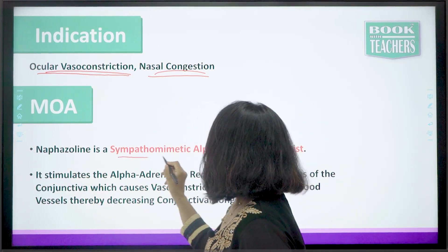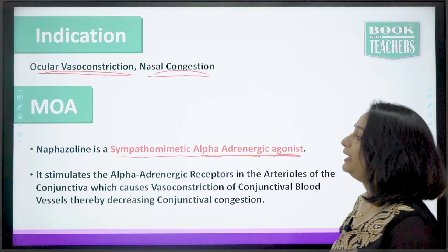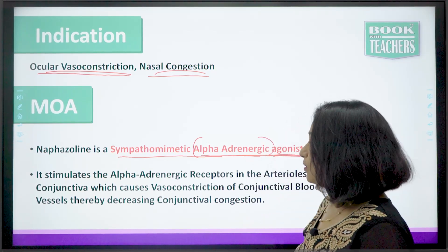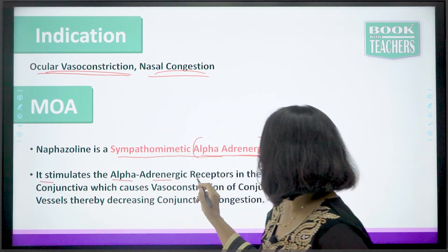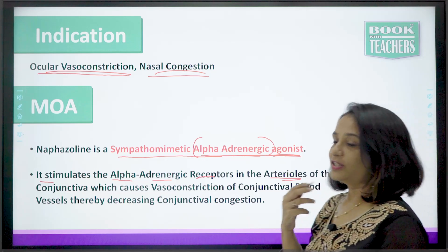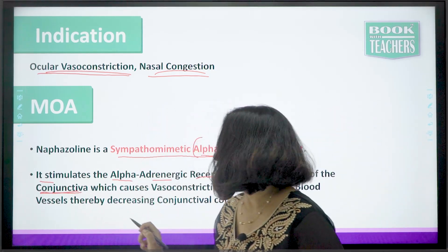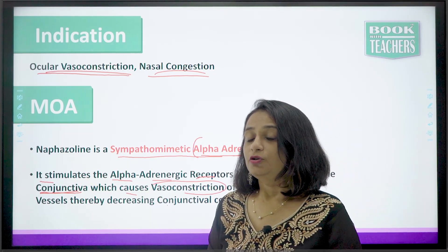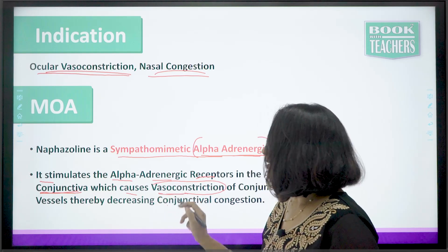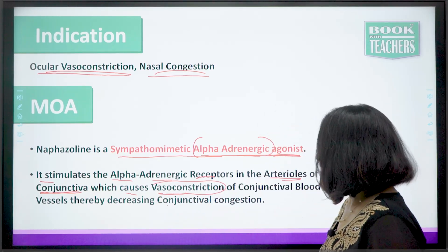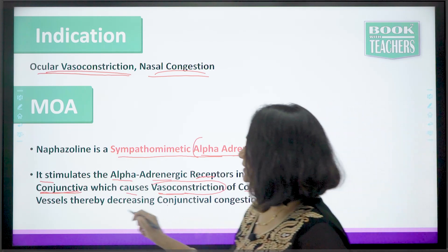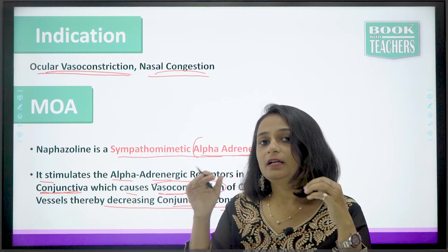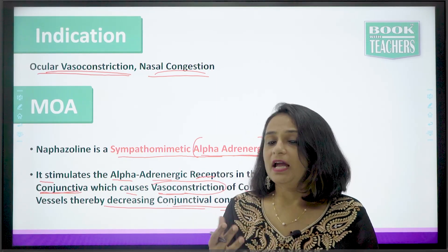Naphazoline is a sympathomimetic alpha-adrenergic agonist, meaning it increases the activity of the alpha-adrenergic receptors. It stimulates the alpha-adrenergic receptors in the arterioles of the conjunctiva, which causes vasoconstriction. In conjunctivitis, the eye becomes very red. Naphazoline constricts the conjunctival blood vessels, thereby decreasing conjunctival congestion and reducing the congestion of the eye.